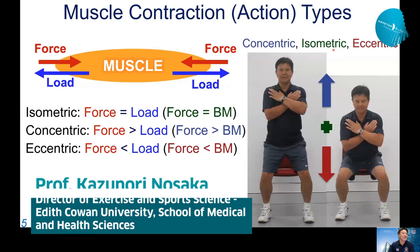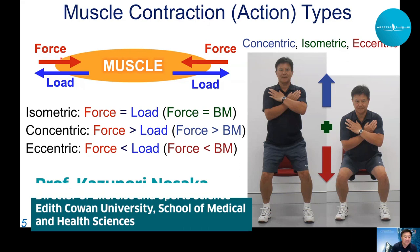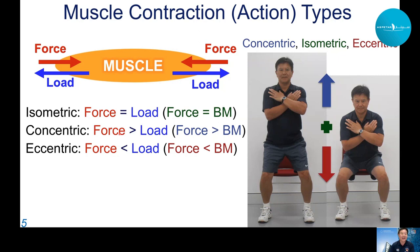There are three types of muscle contractions. One is isometric. In terms of the muscle producing force relative to the load, force is equal to load in isometric. Force is greater than load for concentric. And in eccentric contraction, force is smaller than load.